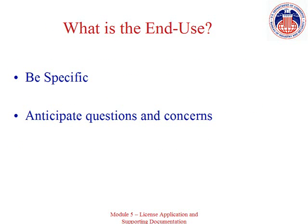The end use description is an important part of the license application as it puts into context the parties to the transaction and the items being exported. It's important to be specific regarding the end use of the item. By anticipating questions and concerns and addressing them in your application, you'll better facilitate the review process. For example, is there a balance between the capability of the item and stated end use? Would a lesser item satisfy the requirement? Is there excess capability, and if so, why?